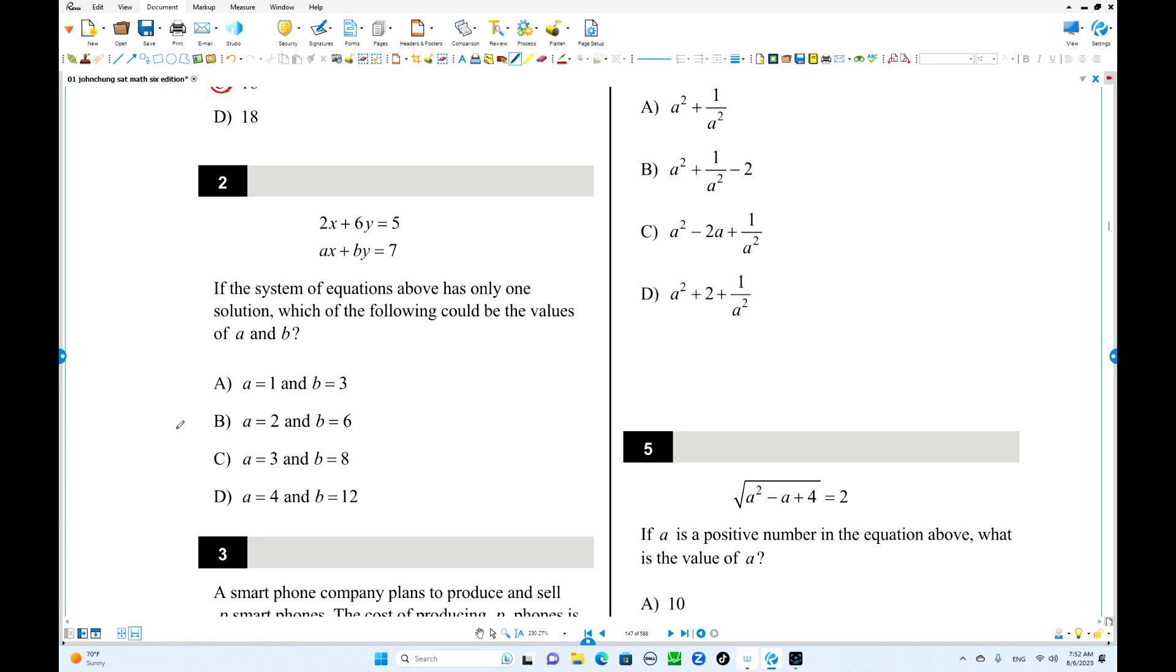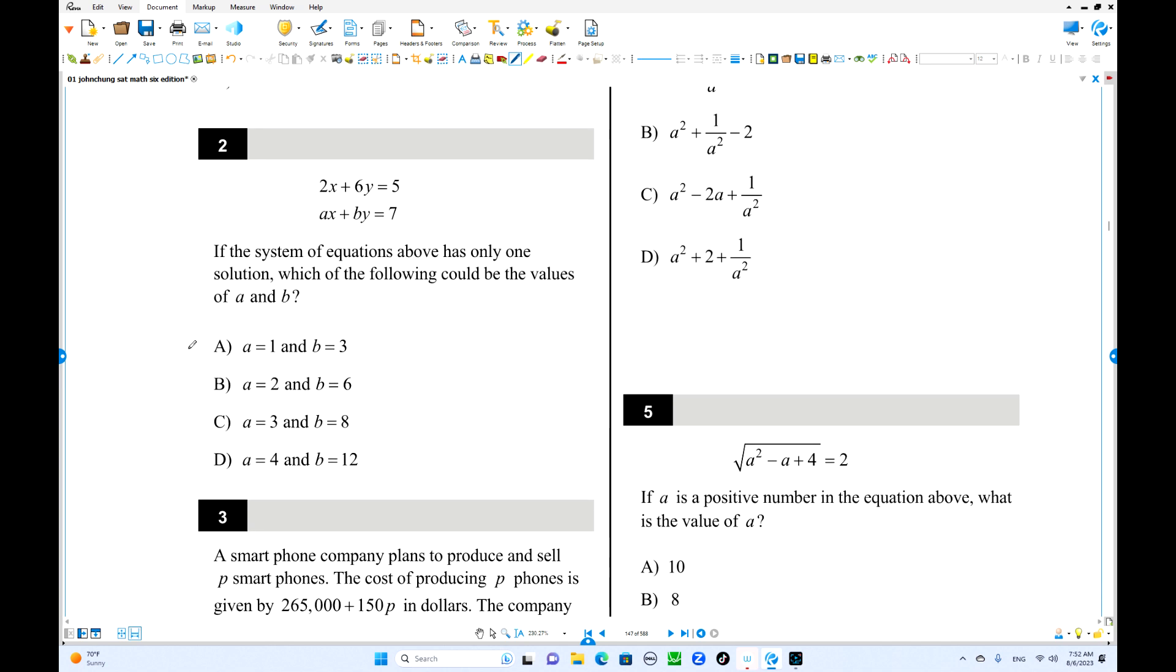The number 2, the system has only one solution. That means what? The slopes are different. Slope is equal to parallel. So maybe you can use this one. You can express the slope and intercept form. y equals negative 2 over 6 is negative 1 over 3x and plus 5 over 6.